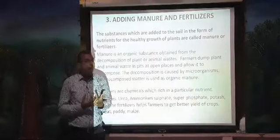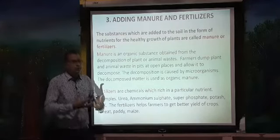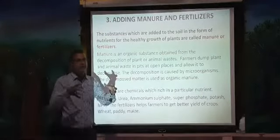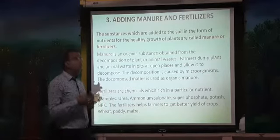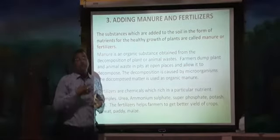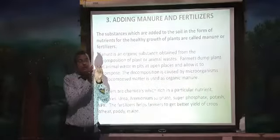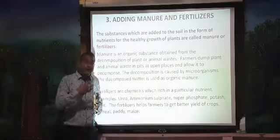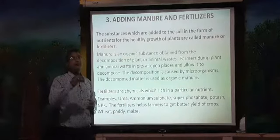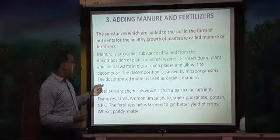So what is manure? Manure is an organic substance, usually made up of organic waste from animals or plants. Farmers make a pit and dump all the waste collected from plants and animals into it. They allow this waste to decompose, with the help of microorganisms. After decomposition, that decomposed matter is put into the fields, and it gives a better yield. This is called organic manure.